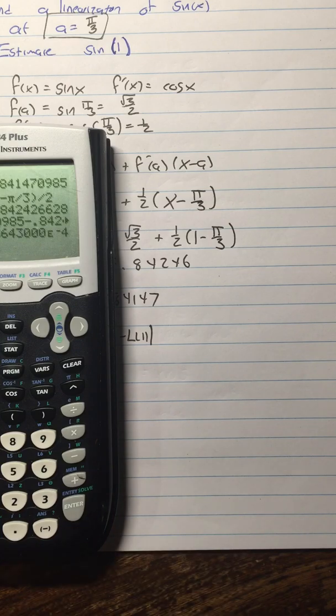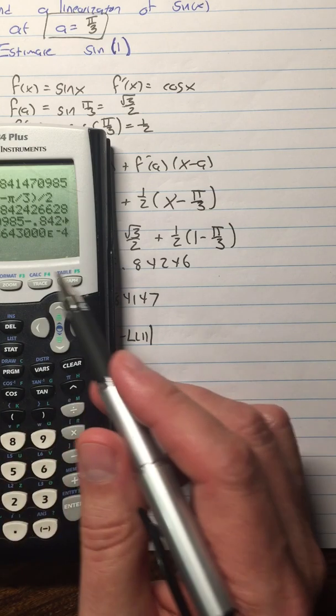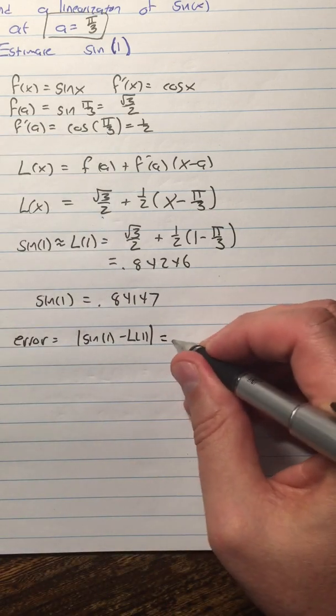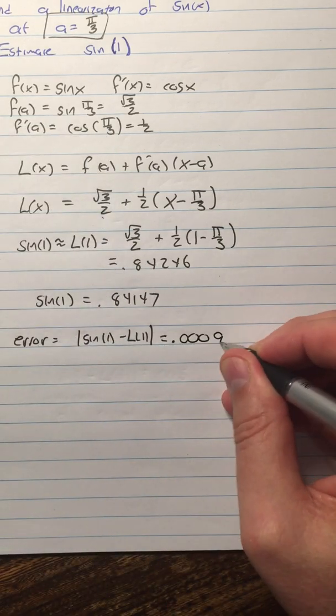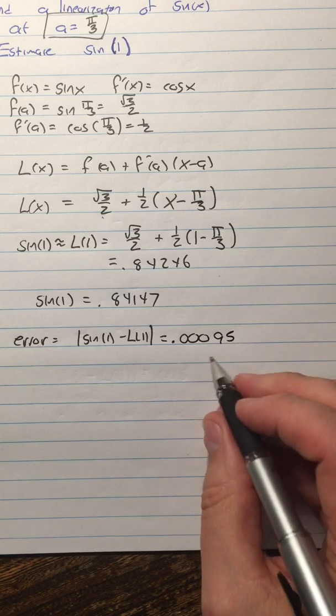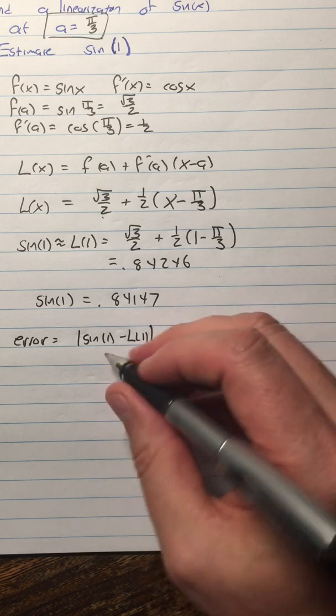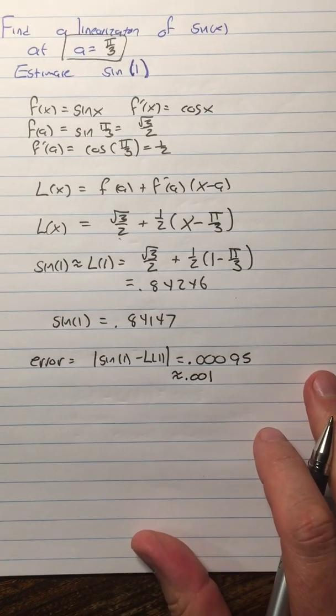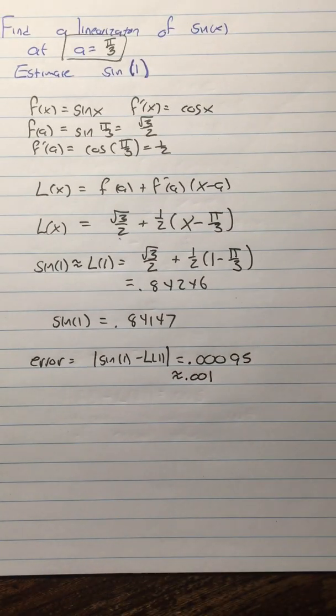So this time I got 9.55 times 10 to the negative fourth power. So that is 0.00095. We can say we're within 1/1000th. We're within 1/1000th factor. So that's, I mean, that's not bad. It's not 20 decimal places, but it's 3 decimal places. So it's a start.